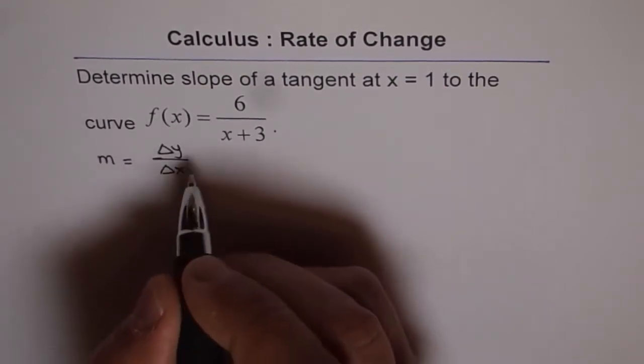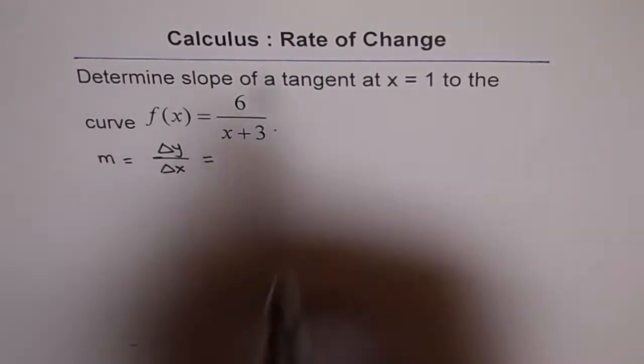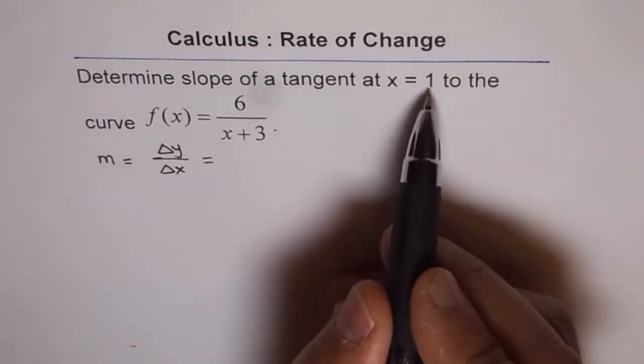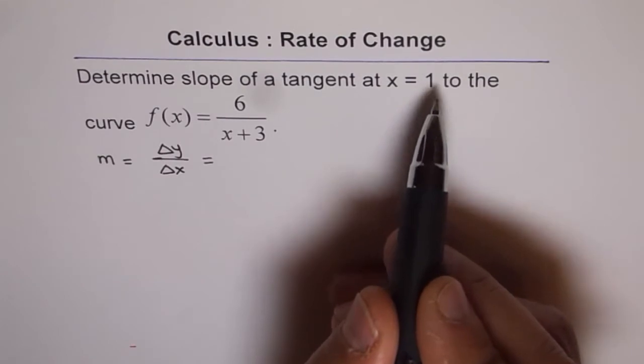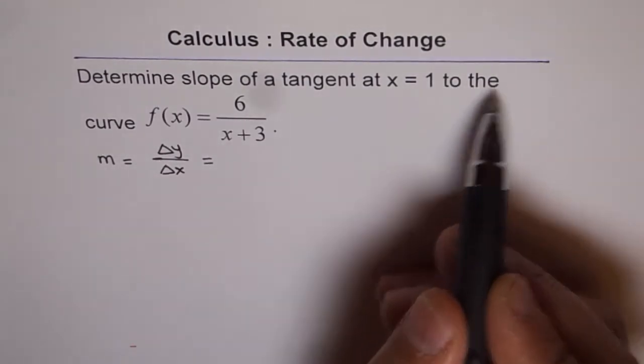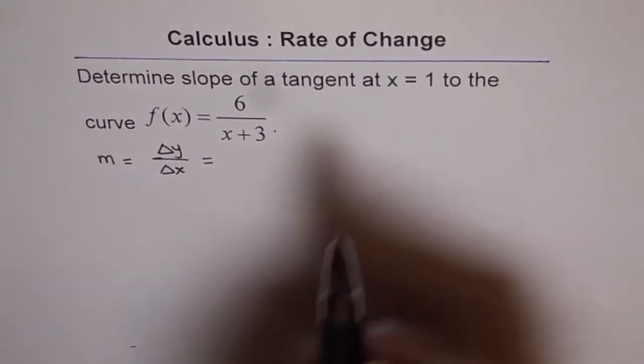Now, for a function, we can take a point, in this case, the point is at 1. So, we can take a point at 1 and at 1+h, where h is very close to 1.